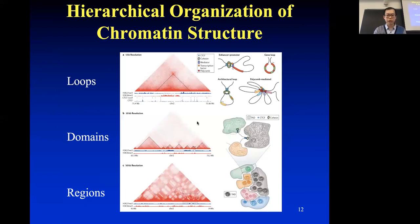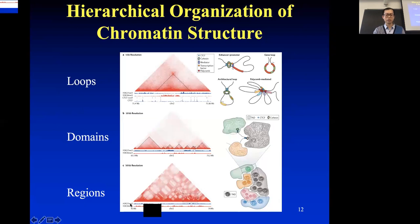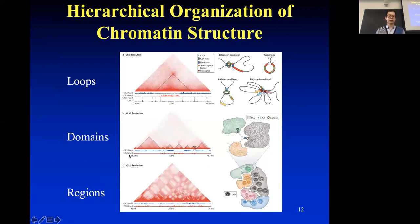If we further reduce the resolution, the heat map will look different again. Now we don't only see triangles — there are some triangles, but those triangles seem to expand to other regions that are far away on the chromosome. That's why it looks like a very different pattern beyond just the domain region, and that's why people define it as a compartment region. Depending on the resolution at which we see the heat map, we can see different patterns, and that's why we study the structure at different resolutions.